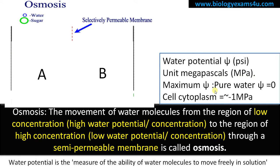The maximum water potential is for pure water and it is zero. Therefore all other solutions have a negative value for water potential. In the case of cell cytoplasm, water potential is approximately minus one megapascal.